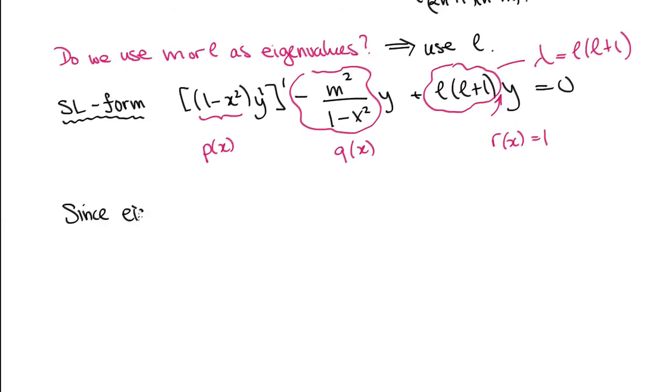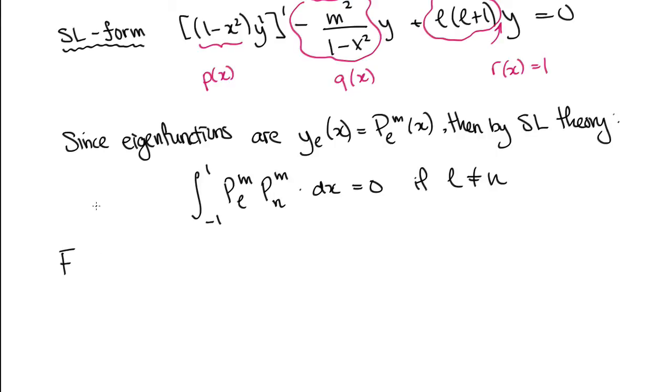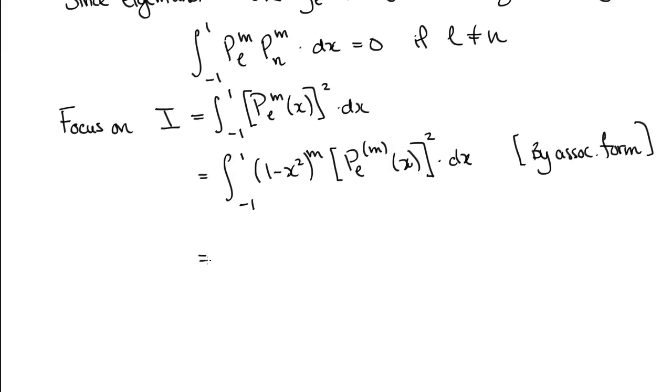and so we know from the usual Sturm-Liouville theory that the orthogonality relation guarantees that the integral of PLM and PNM times R of X is equal to 0 so long as L is not equal to N. Now focus on the integral when N is equal to L, so we define I as the integral of PLM squared. By the formula of part B relating the associated in the original Legendre function,